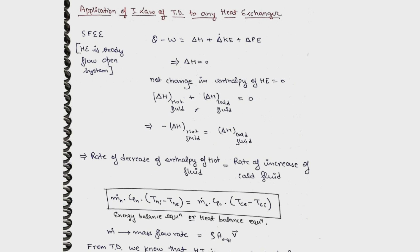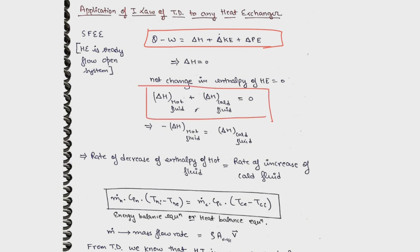Let us apply the first law of thermodynamics to heat exchangers. For an open system, we have the steady flow energy equation: h1 + C1²/2000 + gz1/1000 + Q = h2 + ... This can be written as Q − W = ΔH + ΔKE + ΔPE. Since in heat exchangers there is no heat loss to the surroundings, the net change in enthalpy of the heat exchanger is zero. Therefore, the change in enthalpy of the hot fluid plus the change in enthalpy of the cold fluid equals zero.